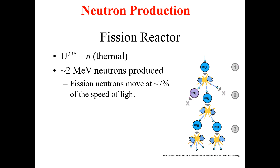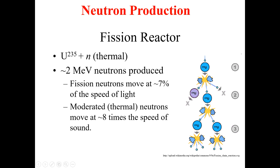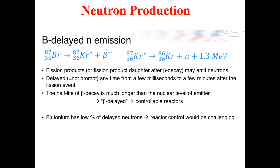Fission neutrons move at a speed which is approximately seven percent of the speed of light. We use different moderators to moderate these neutrons into thermal neutrons. Thermal neutrons move at a speed which is approximately eight times the speed of sound.